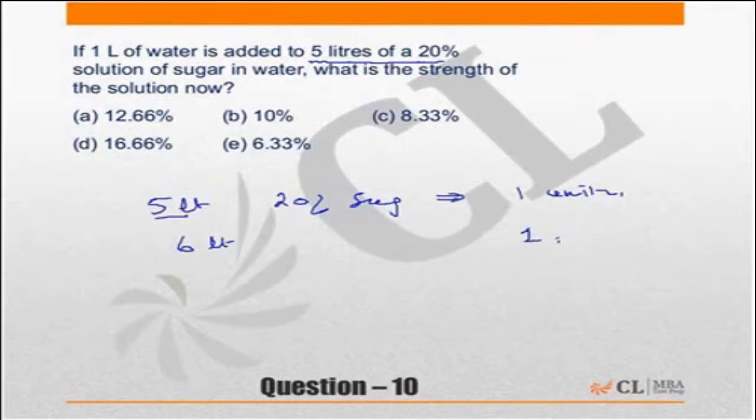From 1 by 5 it becomes 1 by 6, so it's 16.66%. But let's look at this question again in the form of ratios.